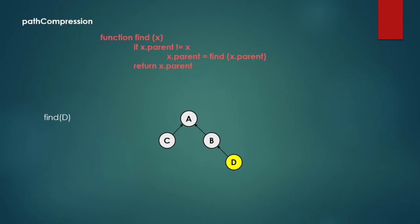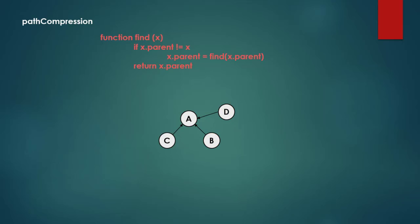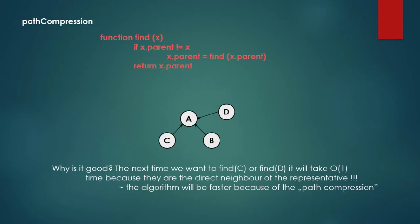If we call find D, we call find recursively on D's parent B, and B's parent is the representative. So we rearrange D to connect directly to the representative. This is why path compression was introduced: whenever we find D again, it takes O(1) constant time to return the representative. This is very useful in Kruskal's algorithm.